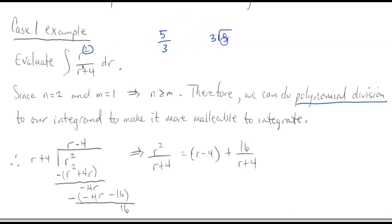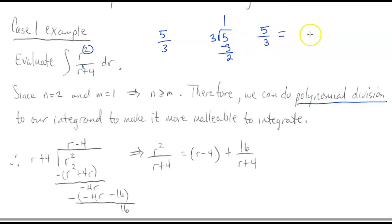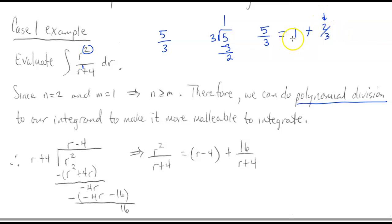The thinking is like this: if we want to figure out what 5 divided by 3 is, three goes into five one time, one times three is three, subtract and get two — so 5÷3 is the same as 1 plus 2/3. Notice how 2 is smaller than 3. We're doing the same thing, but with polynomials instead of just numbers.